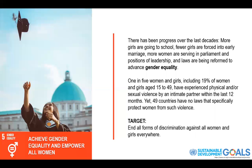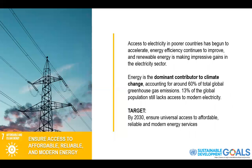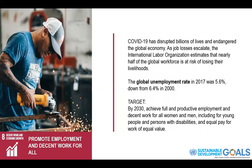Equal rights and opportunities for all genders is the fifth goal of the UNSDG. So far we have been able to achieve this, but we can't deny that there are still some instances where everyone doesn't look at each other equally. Clean water for all is the sixth goal. Affordable and modern energy for the seventh.